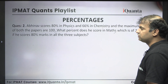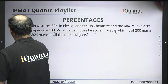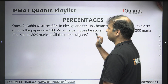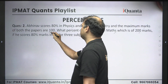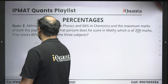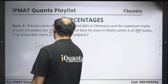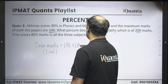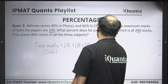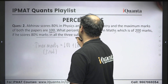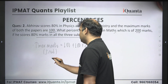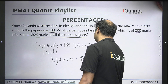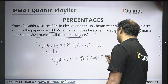The maximum marks of maths is given as 200. So total maximum marks are 100 for physics, 100 for chemistry, and 200 for maths, giving a total of 400. Now, he is getting 80% marks in all three subjects together. So the marks he is getting should be 80% of 400, which is 320.